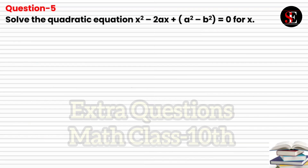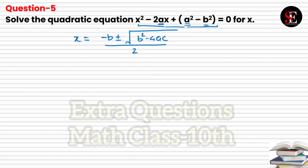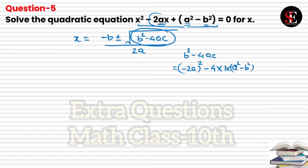Question 5: Solve the quadratic equation x² − 2ax + (a² − b²) = 0 for x. When a quadratic has variables as coefficients, always use the quadratic formula: x = [−b ± √(b² − 4ac)] / 2a. First compute the discriminant: b² − 4ac = (−2a)² − 4×1×(a² − b²) = 4a² − 4a² + 4b² = 4b².